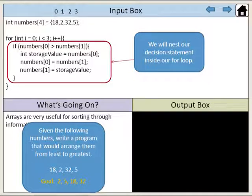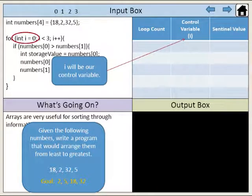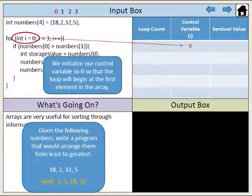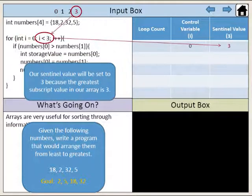We will nest our decision statement inside our for loop. I will be our control variable. We initialize our control variable to zero so that the loop will begin at the first element in the array. Our sentinel value will be set to three because the greatest subscript value in our array is three.